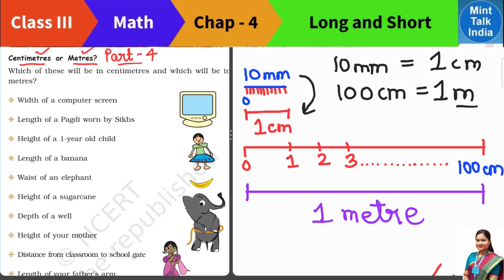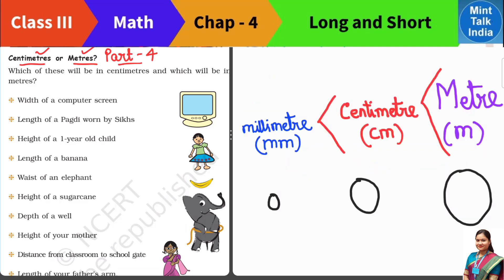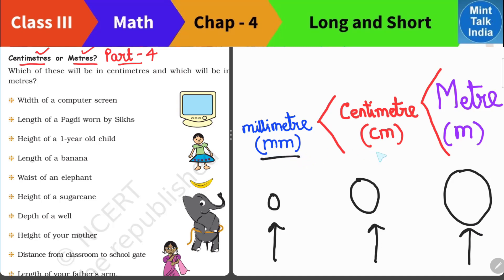Sometimes we cannot measure some things with our small rulers, so we need a bigger unit of measurement. Such as the height of a child, the length of the door, the length of the fridge, the length of the washing machine — we measure all these things in meters. So remember: mm is the smallest unit, after that there is cm, and after that there is meter. 10 mm is equal to 1 cm, and 100 cm is equal to 1 m.